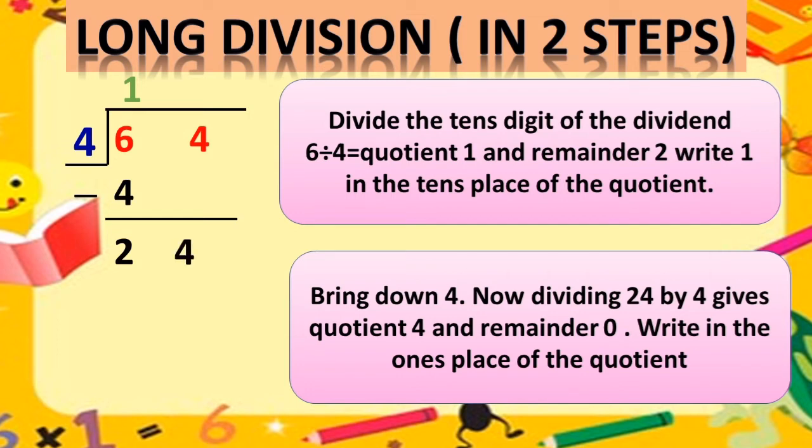Then the next one is 4 come down. Ab hum ne is question ke andar 6 ko to solve kar liya. Aap dekhein 6 ke saath ek number 4 bhi tha. To woh 4 kya hoga? Come down. Kya ho jayega? Come down. Neeche aa jayega. Yes. Ab again aap 4 ka times table padhenge aur check karenge. Kya check karenge ki 24 kab aata hai?